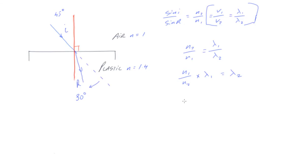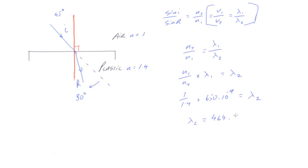So let's substitute the values. We have 1 over 1.4, times 650 nanometers (that's 10 to the power of minus 9), and that equals Wavelength 2 — the wavelength in the plastic. So Wavelength 2 is equal to 464 times 10 to the power of minus 9 meters.